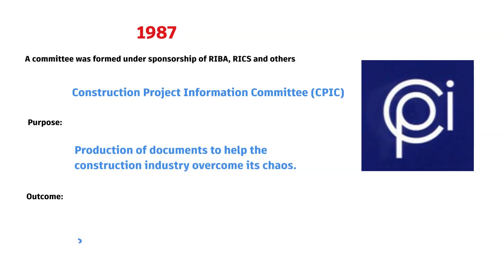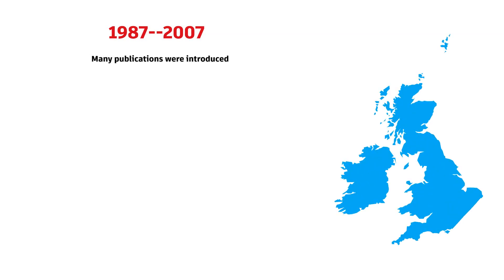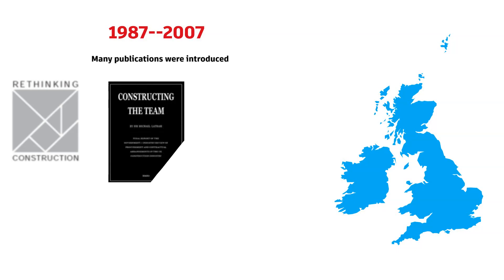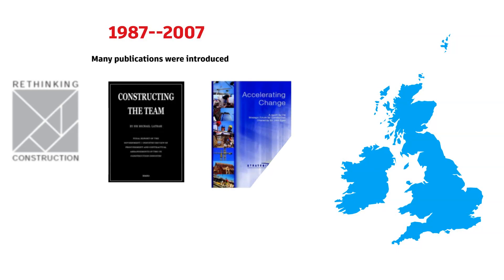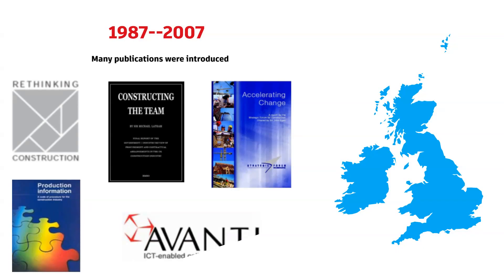In 1993, they made the first successful case study. During the period between 1987 and 2007, many important publications and reports were published. All of these publications aimed to improve the quality of information, increase the predictability of projects' outcomes, and reduce the risk and waste.